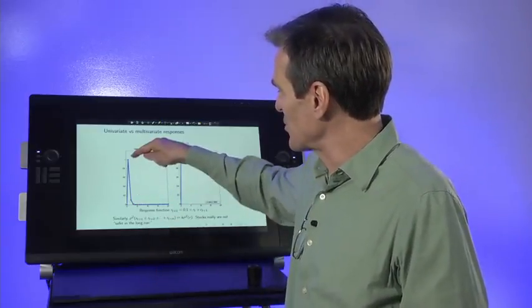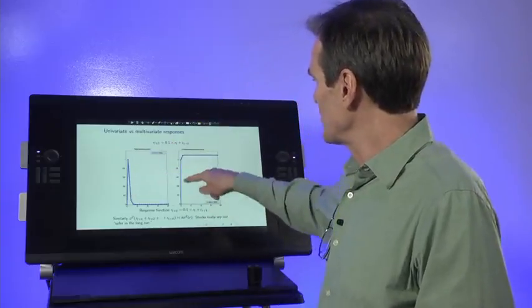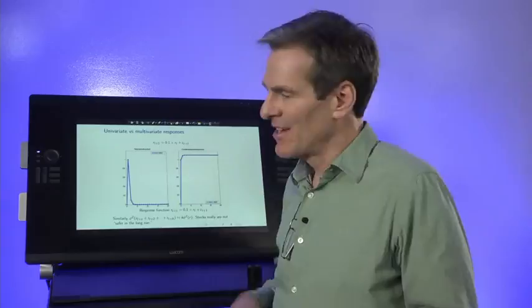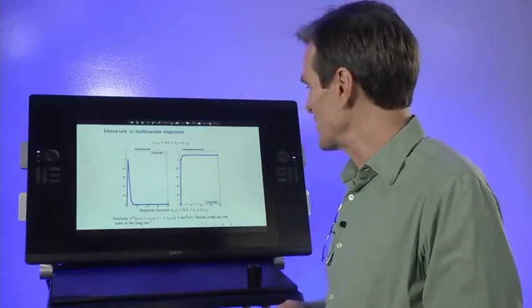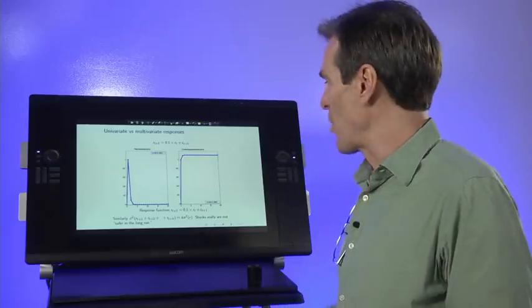If there's a shock, a unit shock to returns today, 0.1 the next day, and then 0.1 at the J. Here's the cumulative impulse response function. 0.1's a very small autocorrelation. On their own, returns look very much like a pure random walk.